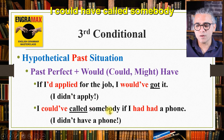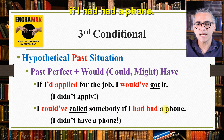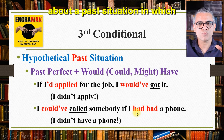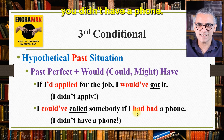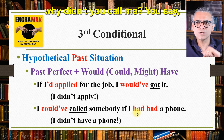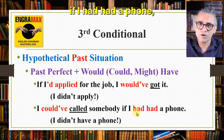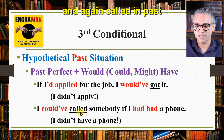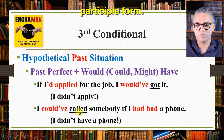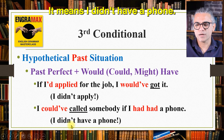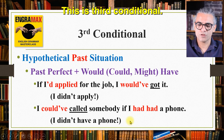Another example: I could have called somebody if I had had a phone. 'If I had had a phone' — you are definitely talking about a past situation in which you didn't have a phone. Someone asks: why didn't you call me? You say: if I had had a phone, I would have called you or I could have called you. And again, 'called' is in past participle form because it follows 'have'. It means: I didn't have a phone.